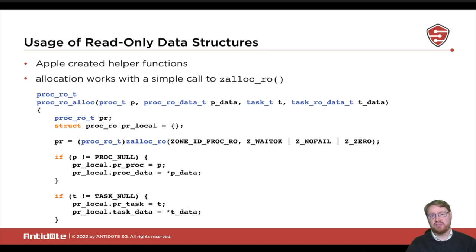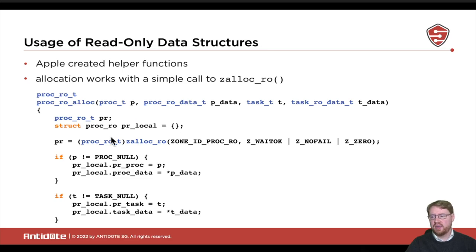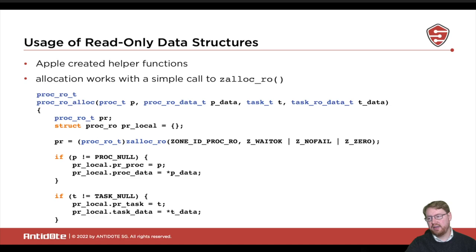Apple has also created helper functions to create these new data structures. For example, you can see the code used for allocating a proc_ro structure. It takes the data that's supposed to be inside and the proc structure it's being allocated for, then it simply calls zalloc_ro, allocates an element, and fixes the pointers inside this structure to point to the right place. This is just taking the memory and making use of it.